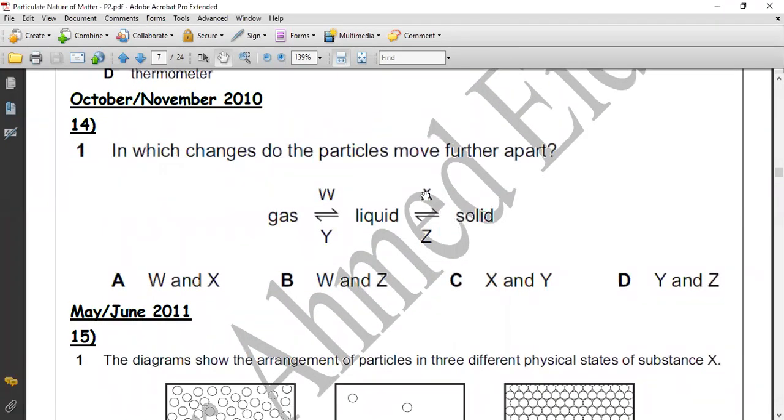Question 14. In which change does the particles move further apart? To know what change makes particles move further apart: from solid to liquid, and from liquid to gas. So let's say from solid to liquid: Z. And from liquid to gas: Y. So the correct answer: G.